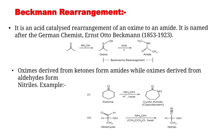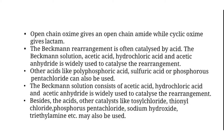For example, a ketone reacted with NH2OH, H+, and heat will form a cyclic amide, and an aldehyde reacted with NH2OH, acetic anhydride, and heat will form a nitrile. Open-chain oximes give open-chain amides, while cyclic oximes give lactams.